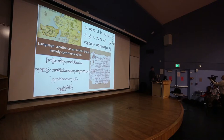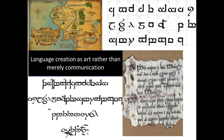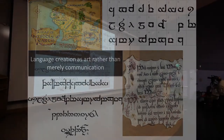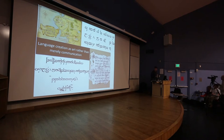Tolkien was different from almost all modern linguists. We modern linguists — Chomsky and others — are interested in language from the communicative approach: what language communicates is how we study language. Tolkien was completely different. He was interested in language as an art form, the sound of language as an end in itself, not just meaning as the end in itself. This was one of the fundamental characteristics of all of his literary creations.